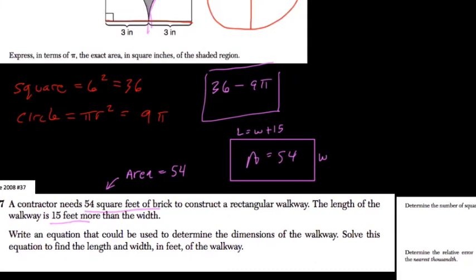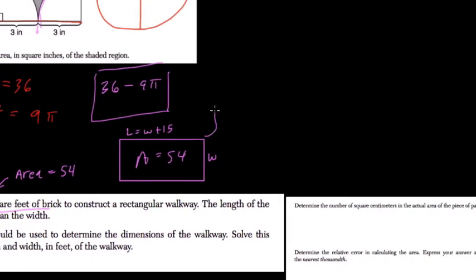So this is just like the question from before, but here the equation I would write is w, the width, times the length which is w plus 15 equals the area. And then I'm going to distribute the w. W times w is w squared plus w times 15 is 15w equals 54.